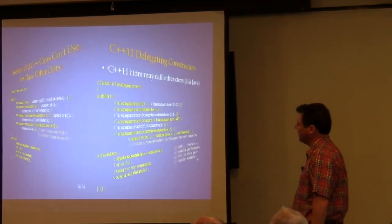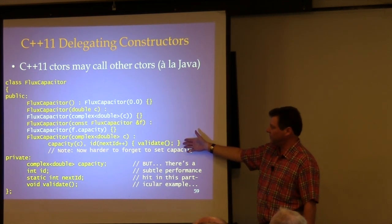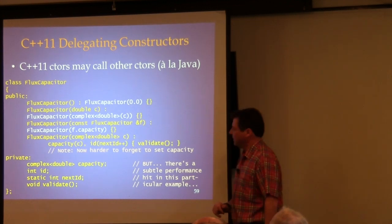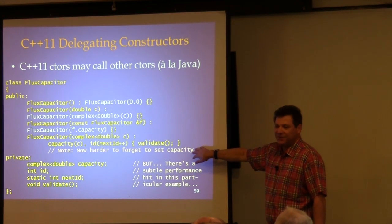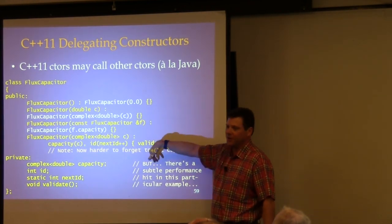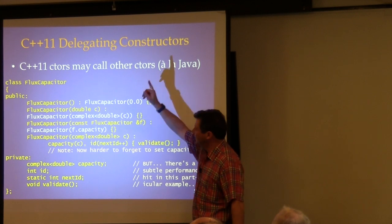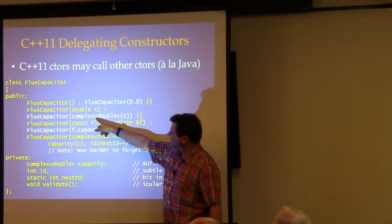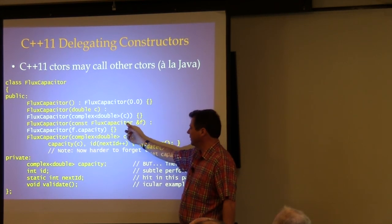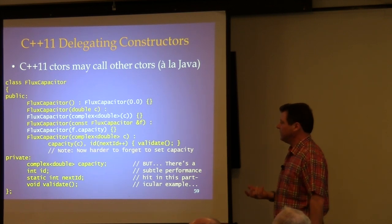In new C++11, the workhorse constructor is the one that takes a complex. It validates, sets the ID to the next available number, and initializes capacity. The default constructor calls the one that takes a double, which calls the one that takes the complex. The copy constructor also calls the one that takes the complex. Now it's much harder to forget to set capacity.